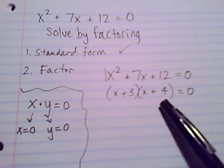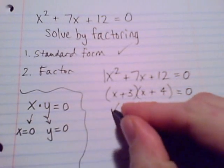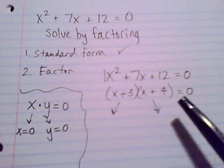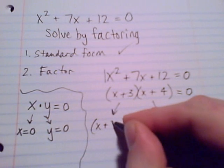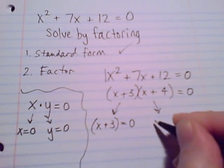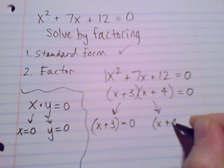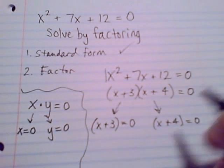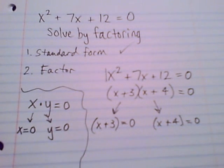If we have it factored, we're looking at two parts that are multiplied together. So like there's my first part, the x plus three. There's the second part, second factor, x plus four. I know that multiply together equals zero.